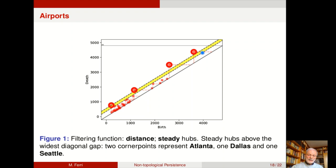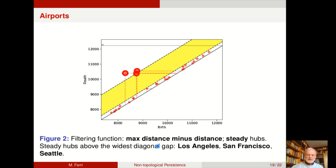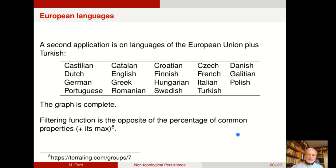We have that above the widest diagonal gap, we have two corner points representing Atlanta, one representing Dallas, but also one representing Seattle, which is just the 12th in the ranking with degree 34. And even if we take the opposite, actually maximum distance minus distance and against steady hubs, we have that all the vertices with the highest degree give rise to corner points which are below, under the widest diagonal gap. And above we find Los Angeles, San Francisco and Seattle, which are between the 7th and the 12th position in our ranking given by degrees.